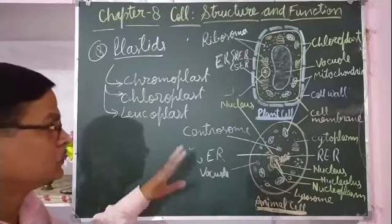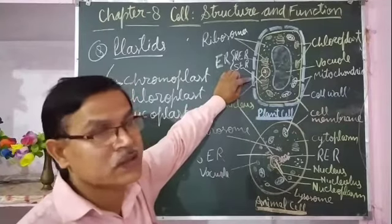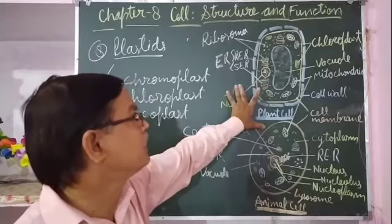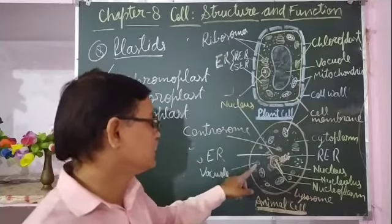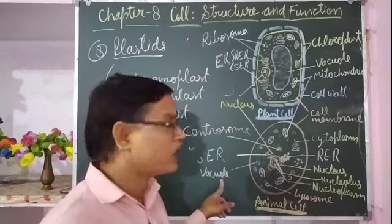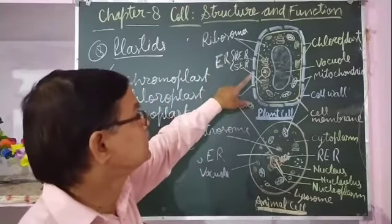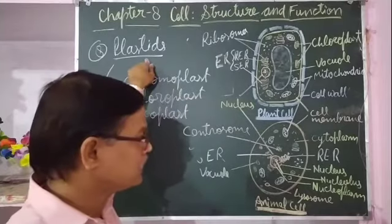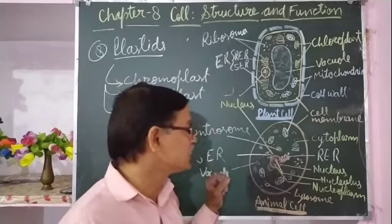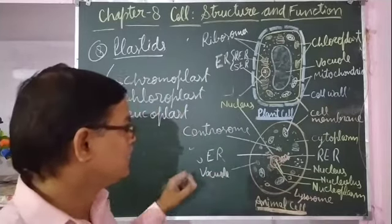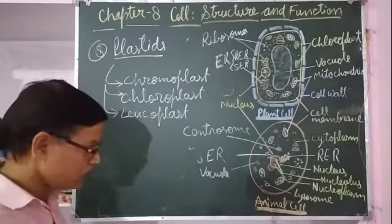Now, differences between plant cell and animal cell: In plant cell, the outermost covering is cell wall; in animal cell it is cell membrane. In plant cell, large vacuoles are present; in animal cell, small vacuoles are present or absent. In plant cell, plastids are present; in animal cell they are absent. Lysosomes are present in animal cell; they are absent in plant cell. So these are the various differences between plant cell and animal cell.